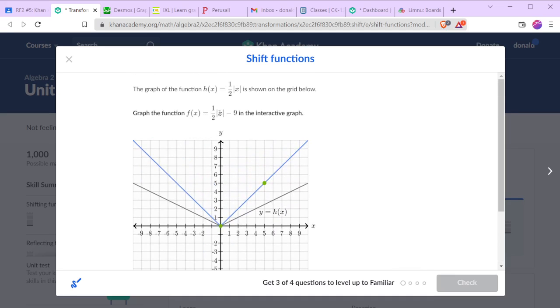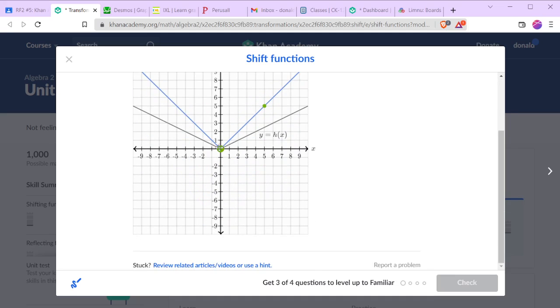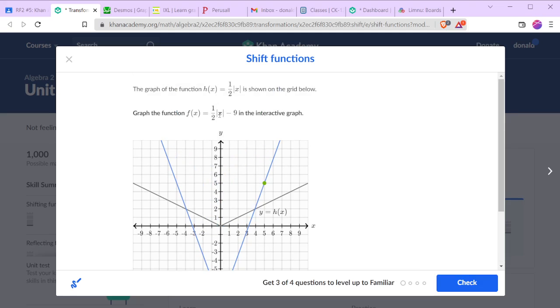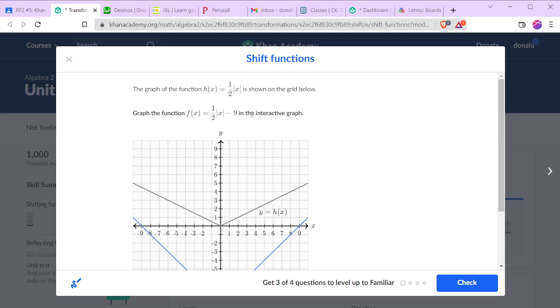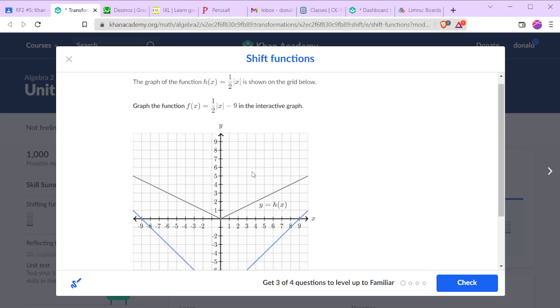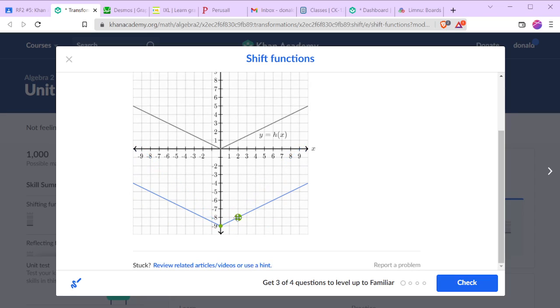So when x equals zero, f equals negative nine. And when the absolute value of x equals two, then we have one half times two, which is one. Subtract nine from that and we get negative eight. Oh, that's not x equals one, that's x equals two. So we see we have the same slope, we're just shifted down nine units.